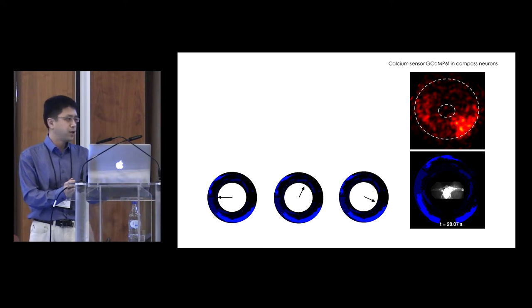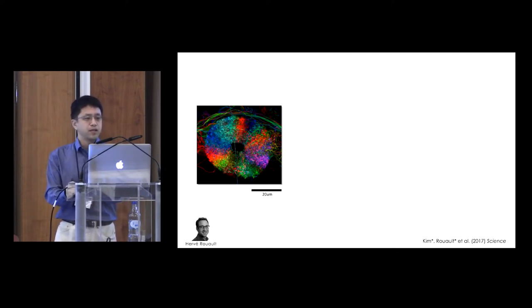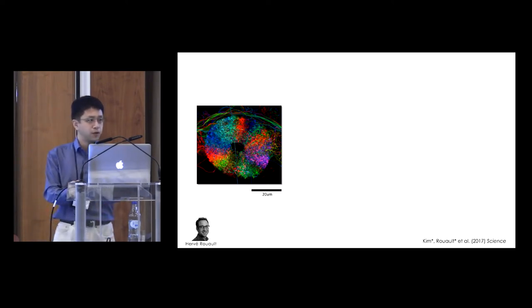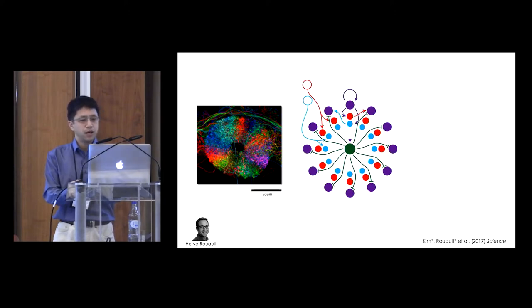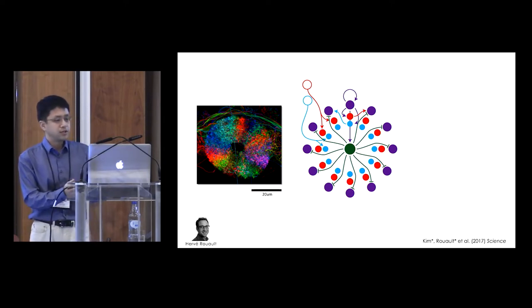One possibility is that the pinning offset depends on experience and we directly tested this hypothesis. To this end, we exploited an important property of the compass system, which is a ring attractor dynamics. This is a diagram of ring attractor network, which has a lot of components, but the relevant property for our purpose is mutual suppression.